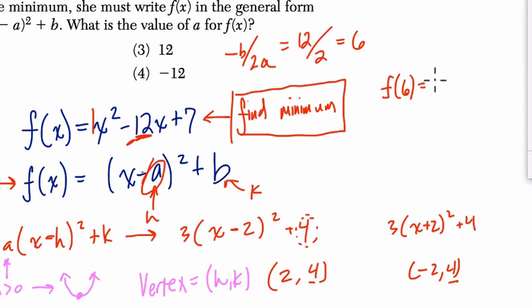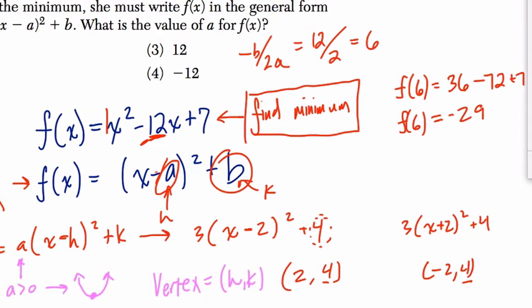So f of 6 would be 36, 6 squared, minus 72, right? 12 times 6, plus 7. So that's negative 36, plus 7, which is negative 29. So if we had to find our b value, or the height, you would take the x value of the minimum and plug it in.